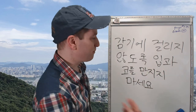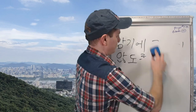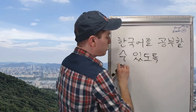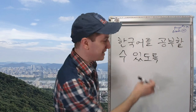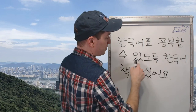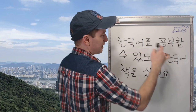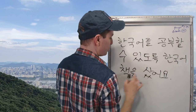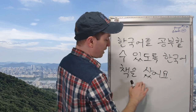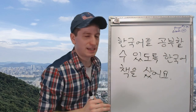한국어를 공부할 수 있도록 means 'so that I can study Korean.' 한국어를 공부할 수 있도록, so that I can study Korean, 한국어 책, a Korean language book, 샀어요 — I bought a Korean book so that I can study Korean.